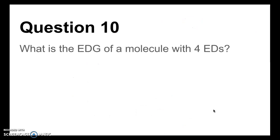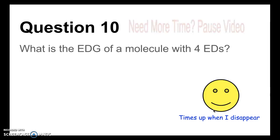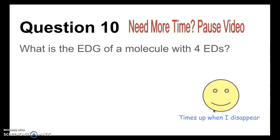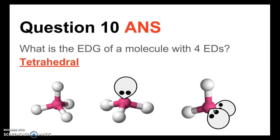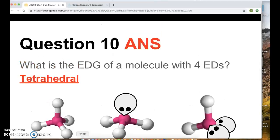Final question. Question 10: What is the electron domain geometry of a molecule with four electron domains? The answer is tetrahedral. Look at all these tetrahedral structures. Remember, for the electron domain geometry, it doesn't matter how many lone pairs you have. If you have four electron domains, it will always have a tetrahedral electron domain geometry. That's it for the quiz review. Good luck on the quiz!